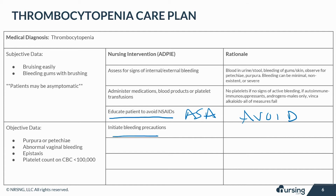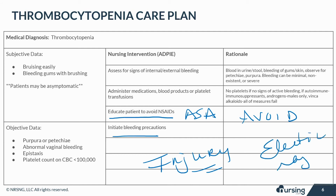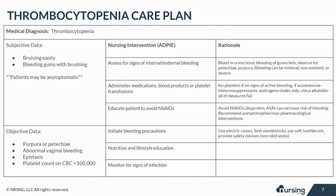Decreased platelets does not always indicate bleeding in the patient, but it may lead to excessive bleeding if injury occurs. Teach your patient about bleeding precautions. Patients should use only electric razors, needlesticks should be limited, they should use a soft toothbrush, and provide safety devices like non-skid shoes and socks to prevent injury. It's important to teach your patient to avoid high-risk activities that could cause injury like contact sports to reduce the risk of bleeding.